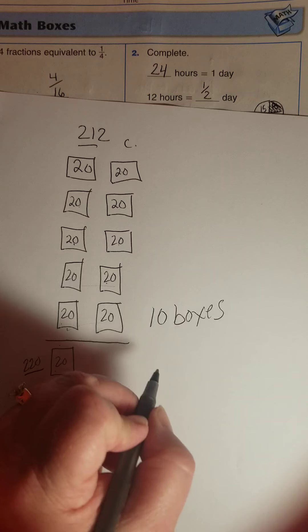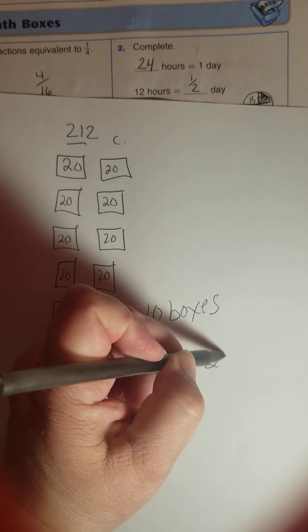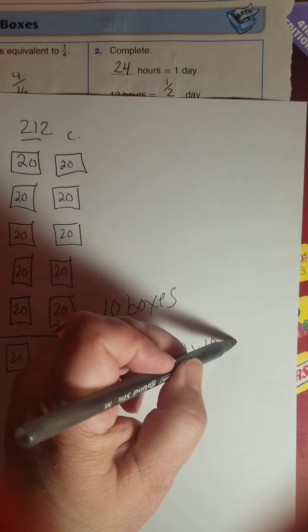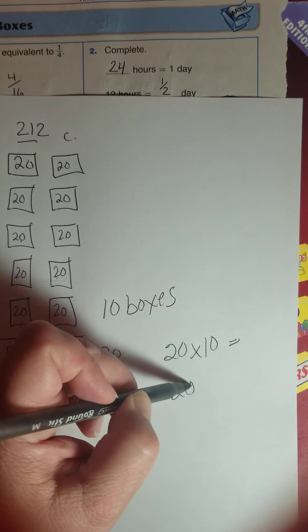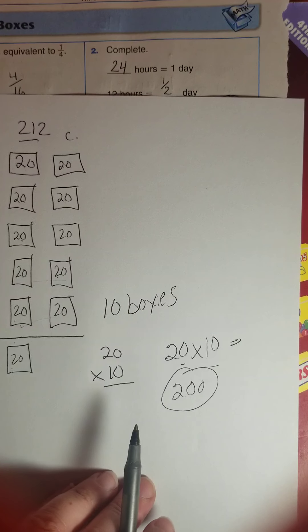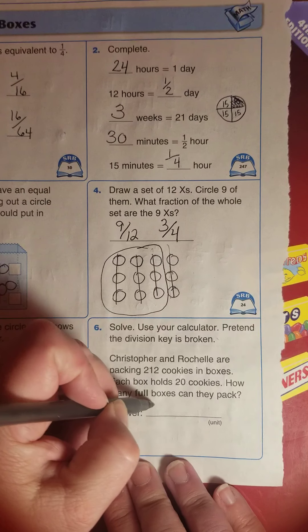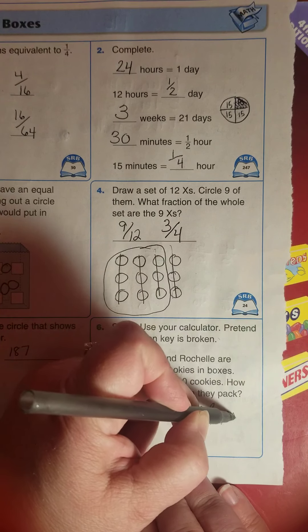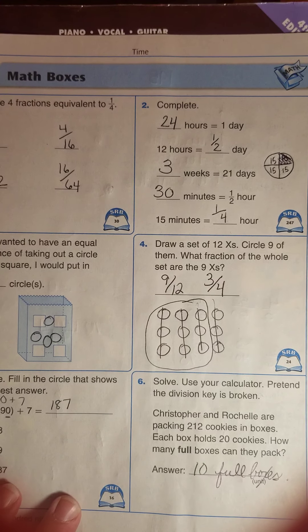Could we check that with some multiplication? Twenty times ten, if we did it this way. Two times one is two and you add those two zeros. That would be two hundred and that makes sense with our math. There you go. Ten boxes full of cookies. Ten full boxes.